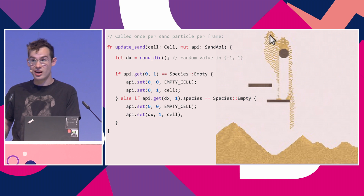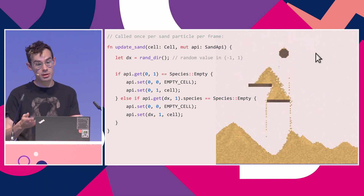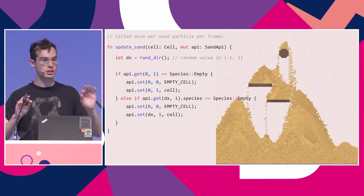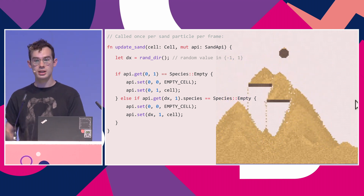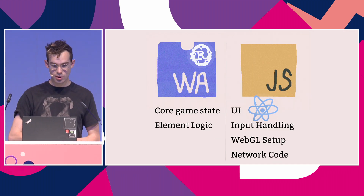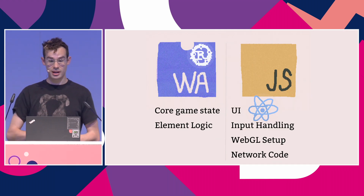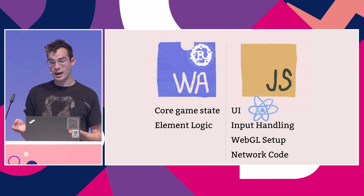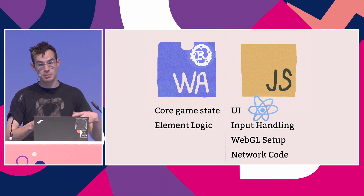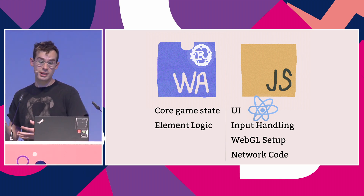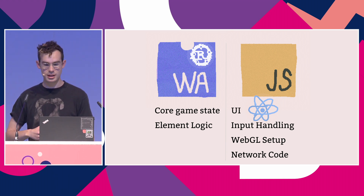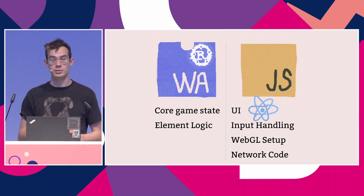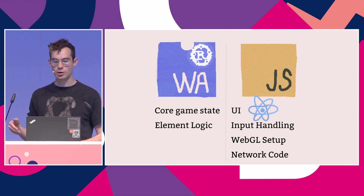There are about 18 other elements, and some are a little more complicated, but they all have the same pattern: a single function that calls APIs to read their neighbours and write to their neighbours, giving you different behaviour. Being able to put the performance-critical things in WebAssembly and implement everything else in JavaScript using the ecosystem was really the key to being able to make this project quickly.